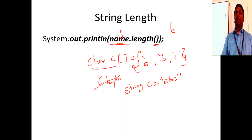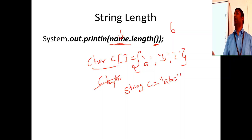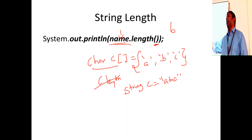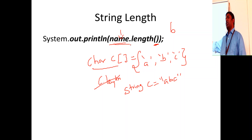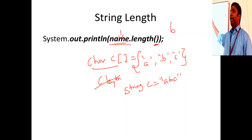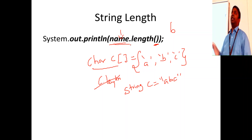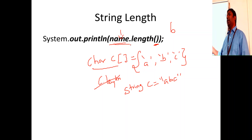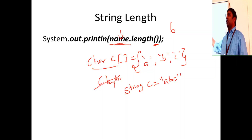When you apply a string handling function on a character array, you may get unexpected results. The actual rule is: string handling functions should only be applied on a String object. In C++, anything terminated with a null character becomes a string. The same concept applies here - do not apply string handling functions on character arrays.